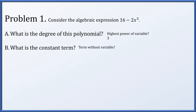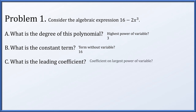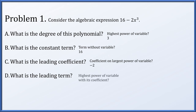What's the constant term? That is a term that has no variable in it — that's the 16. What is the leading coefficient? That's the coefficient on the largest power of the variable. Our largest power was x cubed, and it's being multiplied by negative 2. What's the leading term? That is the highest power of the variable with its coefficient — negative 2x cubed.